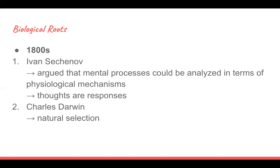The next heading is biological roots, starting in the 1800s with Ivan Sechenov — I definitely said that wrong too. He argued that mental processes could be analyzed in terms of physiological mechanisms and thoughts or responses. And then Charles Darwin with his theory of evolution as natural selection.